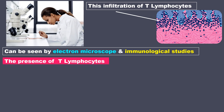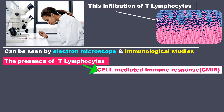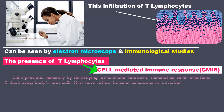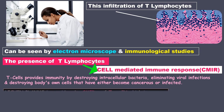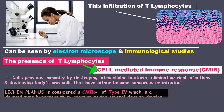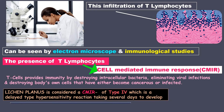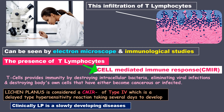All this infiltration of T lymphocytes with CD4 positive and CD8 positive cells can be seen by electron microscope and immunological studies. The presence of T lymphocytes indicates a cell mediated immune response. So lichen planus is considered a CMIR of type 4, which is a delayed type of hypersensitivity reaction taking several days to develop. Clinically also, lichen planus is a slowly developing disease.